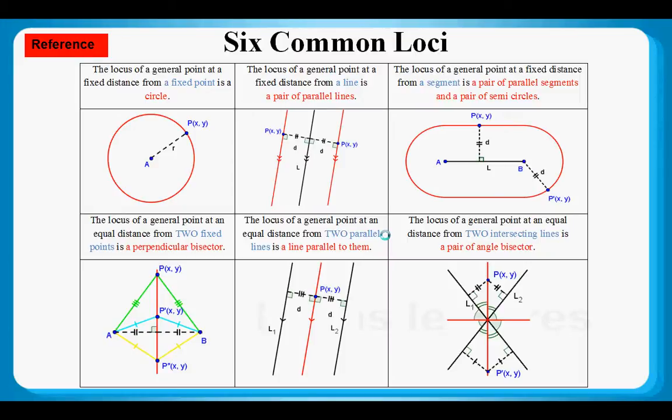We need to go to question 13b, but before we do, we have to do a little bit of review. I will help you to organize your knowledge structure of loci. There are six common loci for our syllabus. The locus of a general point at a fixed distance from a fixed point is a circle.